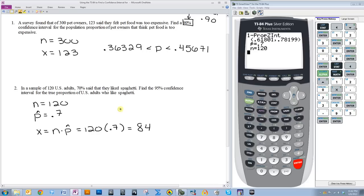So, 0.61801 is less than P, is less than 0.78199. And that's it!